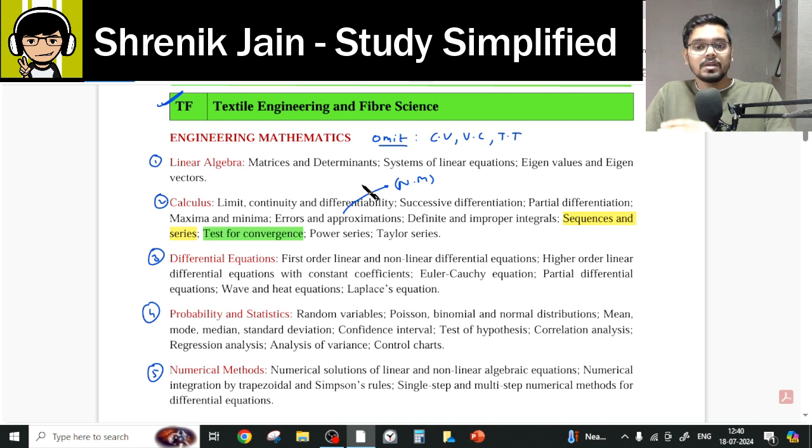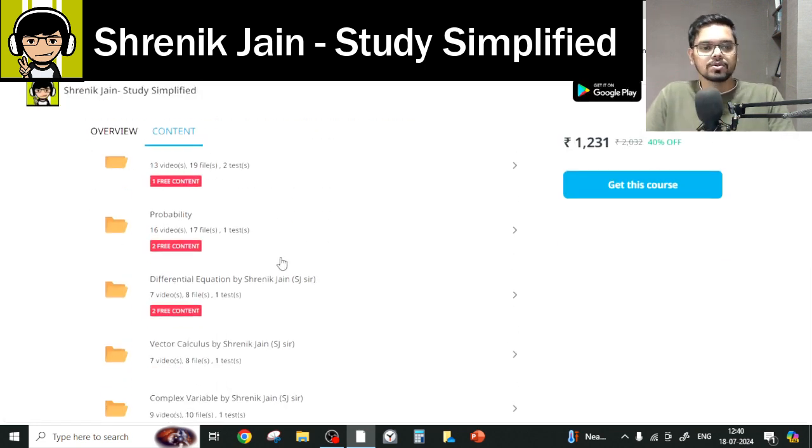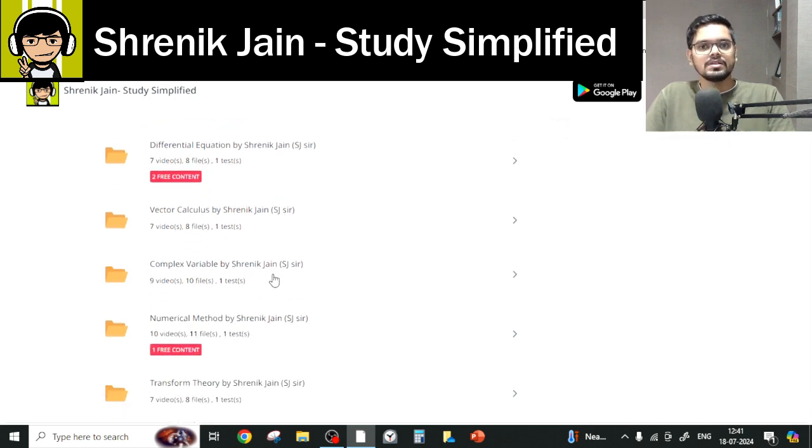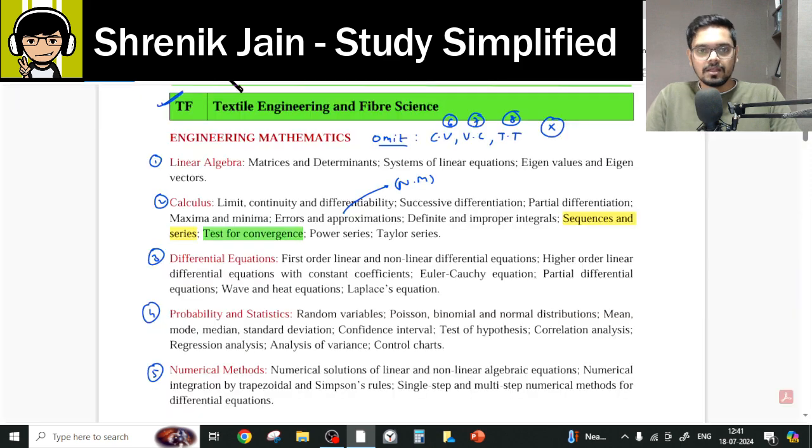And what about the remaining three chapters? Complex Variable, Vector Calculus, and Transform Theory is completely omitted. So no lecture you have to watch from this course regarding CV, VC, and TT. Okay? Understood? Those three chapters are omitted. Otherwise, everything is there.